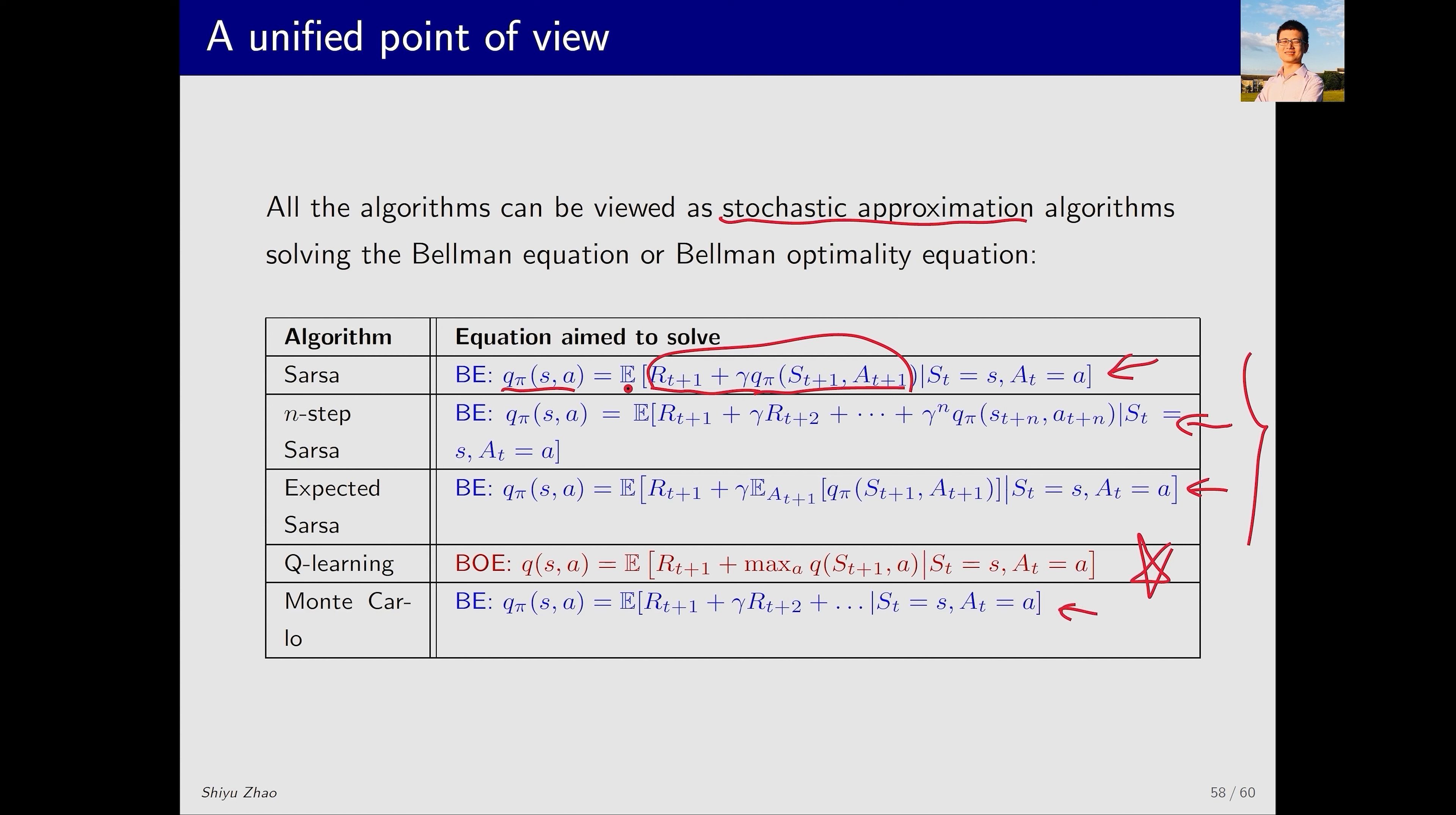The Monte Carlo method aims to solve this equation, which you could say is the Bellman equation. Essentially, it's the most basic definition of action value.